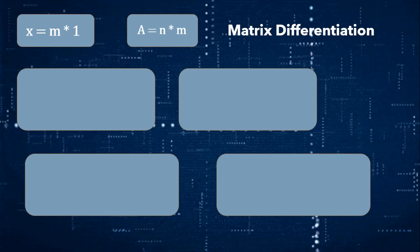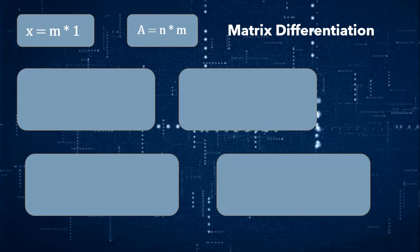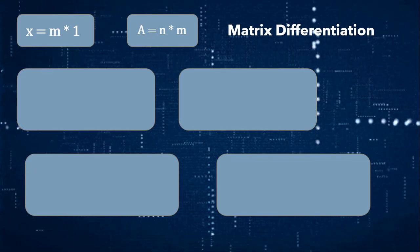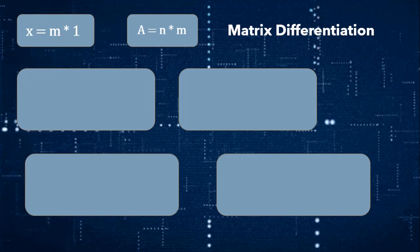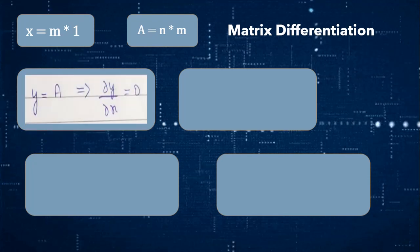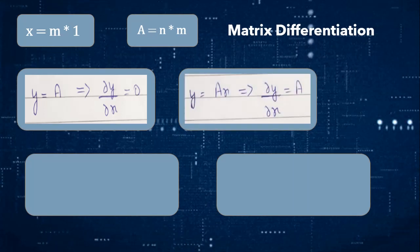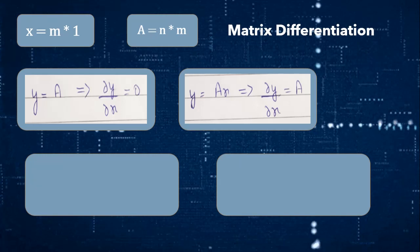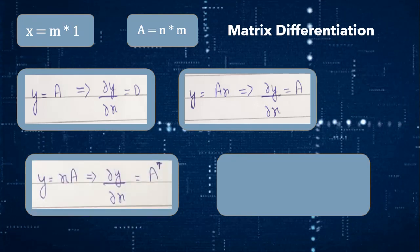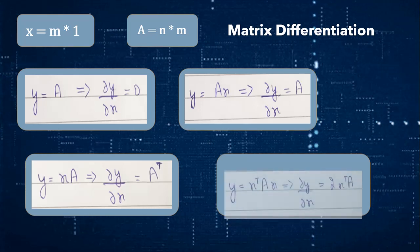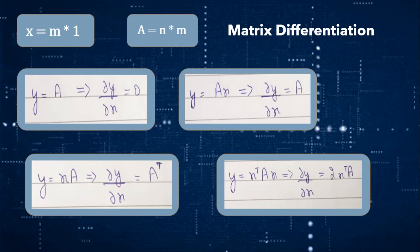Before going ahead, let me tell you a little bit about matrix differentiation because we need that for solving our equation. If x equals m into 1 matrix and a equals n into m matrix, then we will use mentioned formulas. If y equals a, then the partial derivative with respect to x is 0. If y equals ax, then the derivative is matrix A. If y equals xA, then derivative is A transpose. And when y equals x transpose AX, then partial derivative is twice of x transpose A.